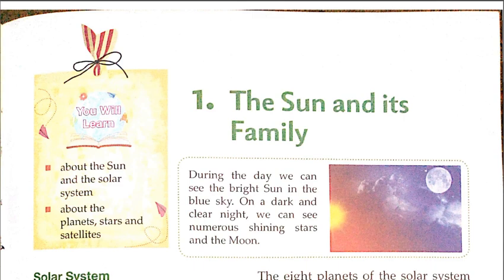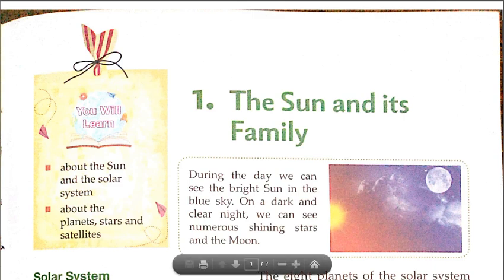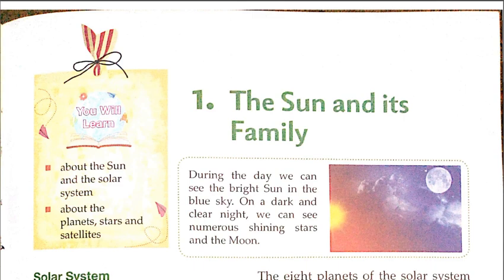We will learn about the planets, stars, and satellites — hum suraj ke baare mein, apne solar system ke baare mein, grahon ke baare mein, taron ke baare mein, aur satellites ke baare mein padhenge. During the day we can see the bright sun in the blue sky. On a dark and clear night we can see numerous shining stars and the moon.